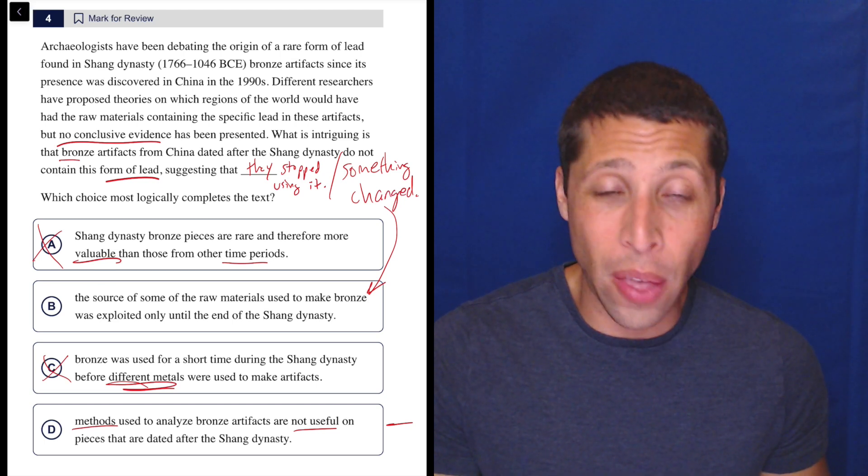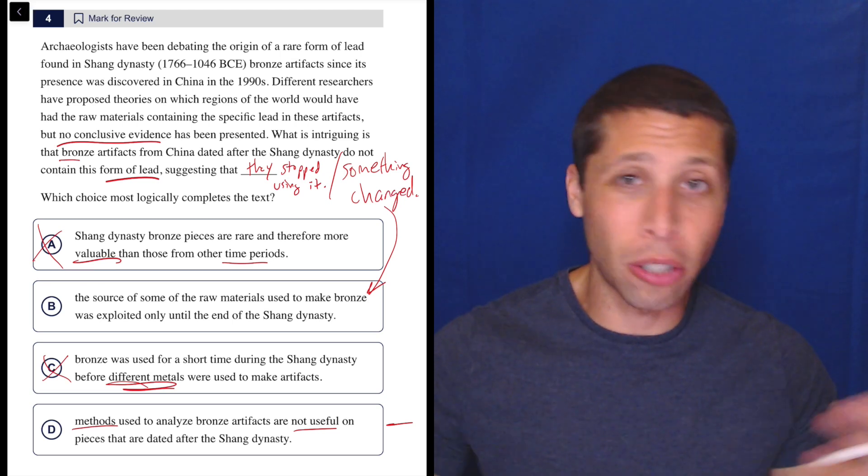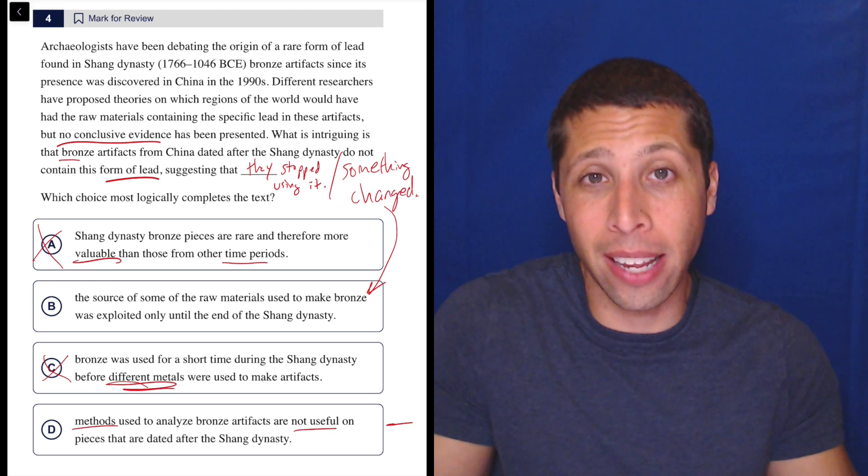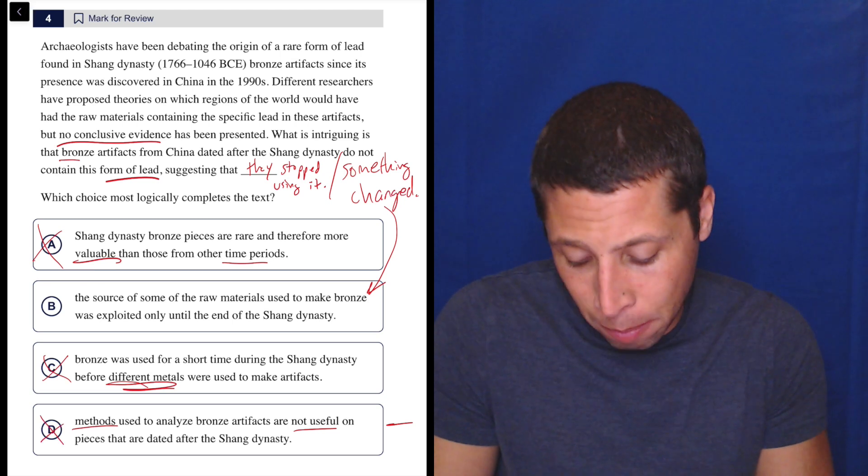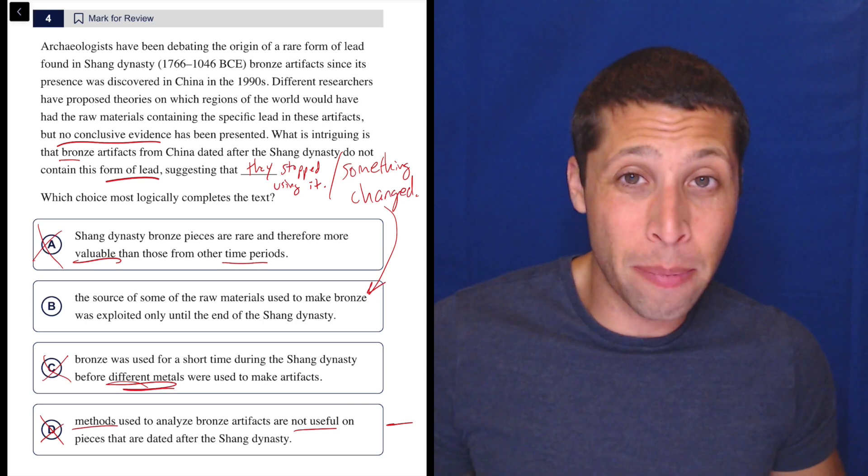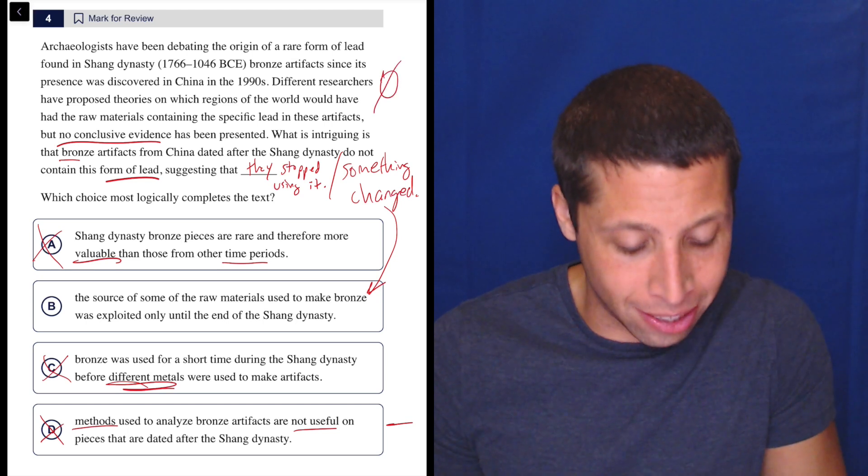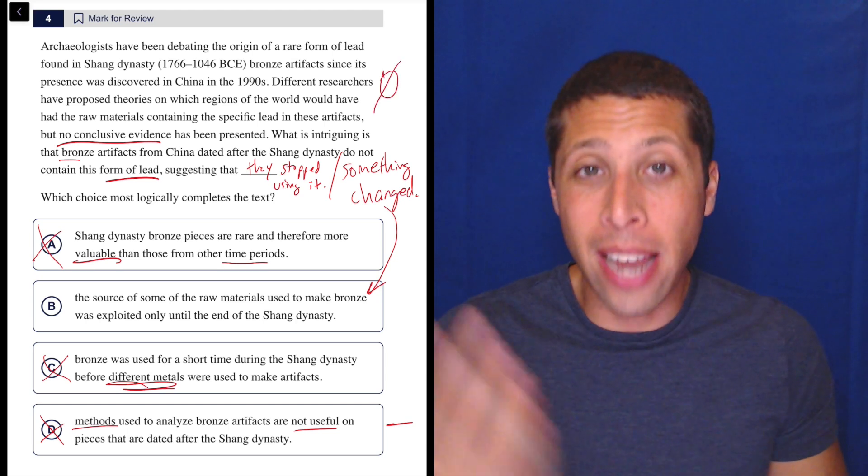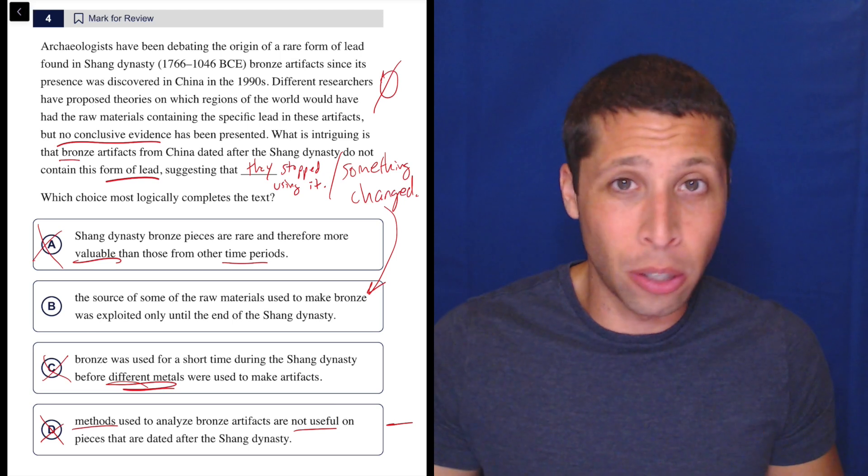Are they saying that there's some bad science, some bad experiment, some bad method that they used? No, it's basically just a description of this lead and the facts about it. It doesn't seem positive to me, but it doesn't seem negative either. It's a very neutral passage.